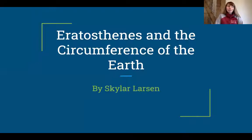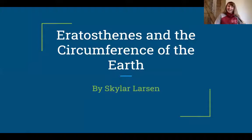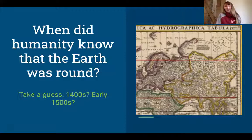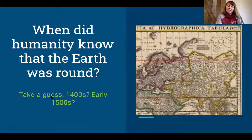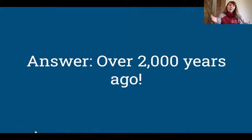All right, so today I'm going to be talking about Eratosthenes and the circumference of the Earth. I looked up how to say Eratosthenes; I think I'm pronouncing it correctly, hopefully. As an intro question: when did humanity know that the Earth was round? Based on your general history knowledge, can you think of a year when that was discovered? 1400s, early 1500s? Think of a number in your head as your best guess. The answer: the ancient Greeks knew.